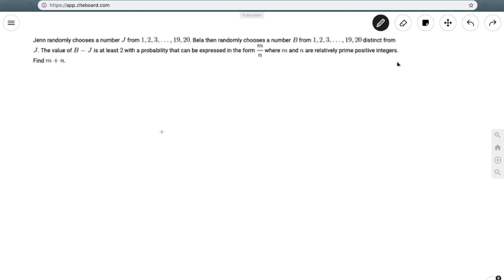The natural way to approach this problem is doing casework. Let's see what the possibilities of b are, given that Jen picks 1 on her first turn.